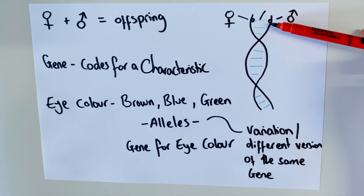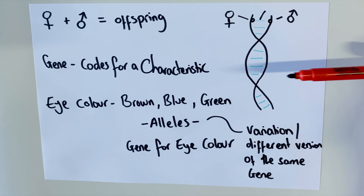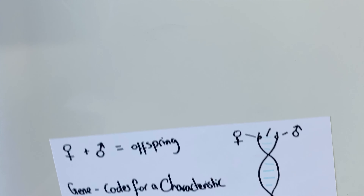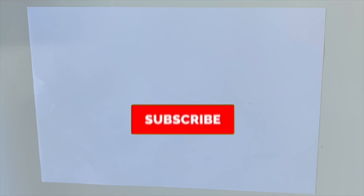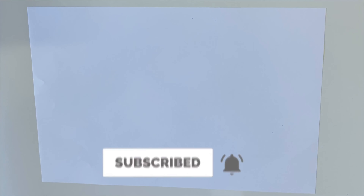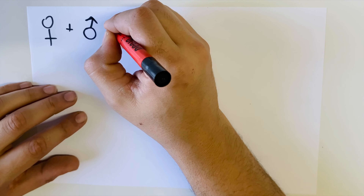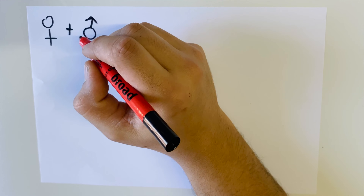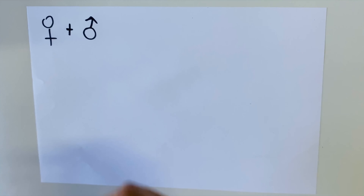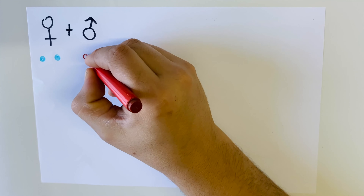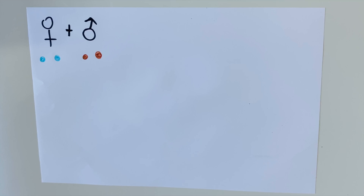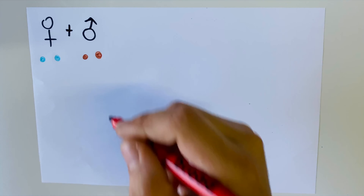If we continue with the case of eye color: eye color in humans comes in a variety of different base forms — some people have brown eyes, some have blue eyes, some have green eyes, and so on. All of these belong to the same gene for eye color. Looking at the DNA strand, we can identify one gene for eye color — you get one copy from dad and one copy from mom.